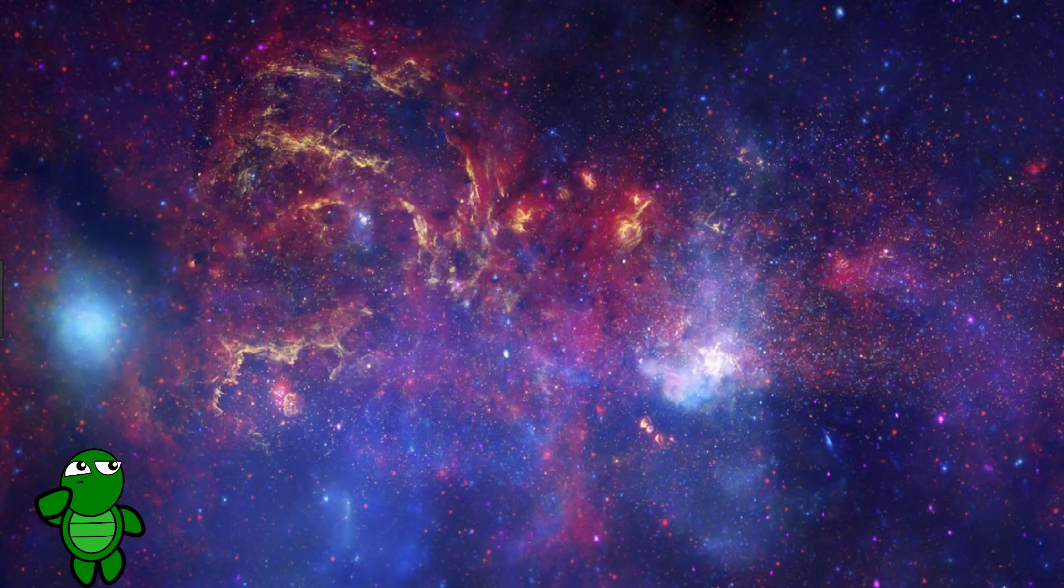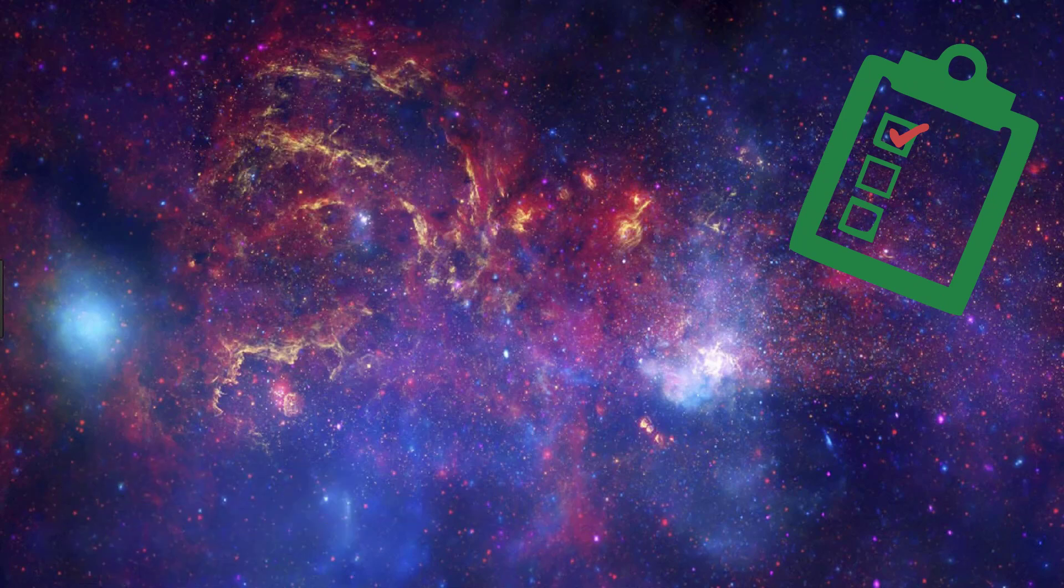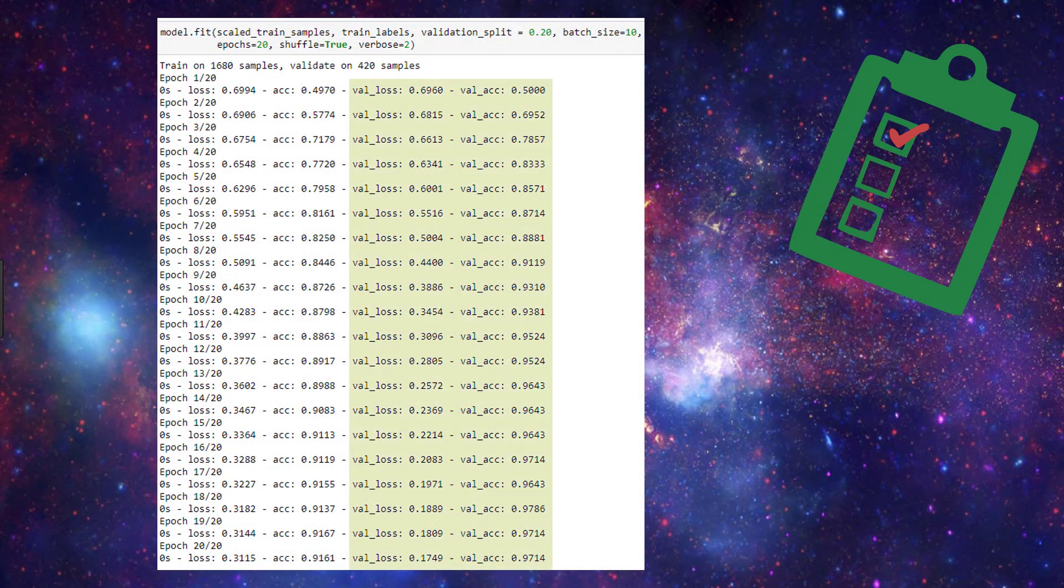So how do we know if our model is overfitting? We can tell that the model is overfitting based on metrics that are given for our training and validation data during the training process. We previously saw that when we specify a validation set during training, we get metrics for the validation accuracy and loss as well as the training accuracy and loss. If the validation metrics are considerably worse than the training metrics, then that's indication that our model is overfitting.